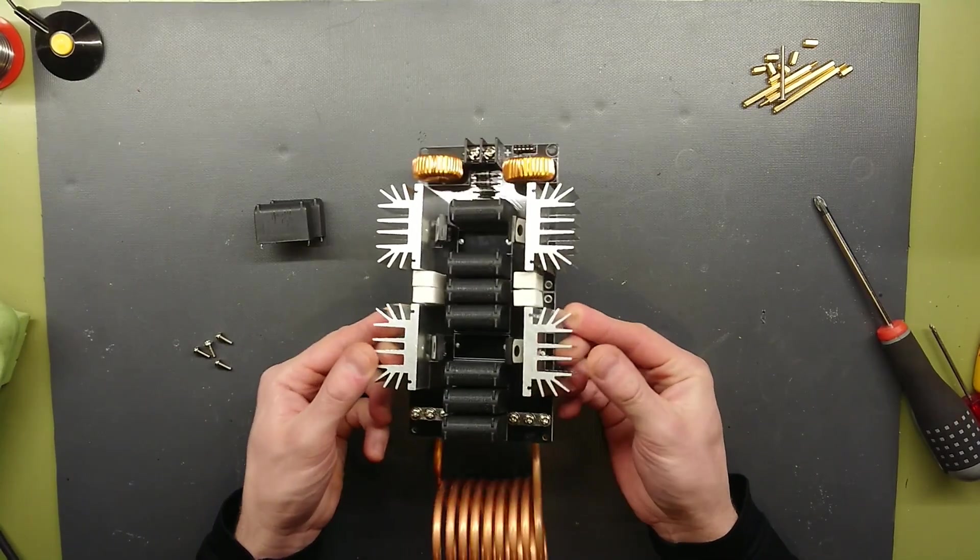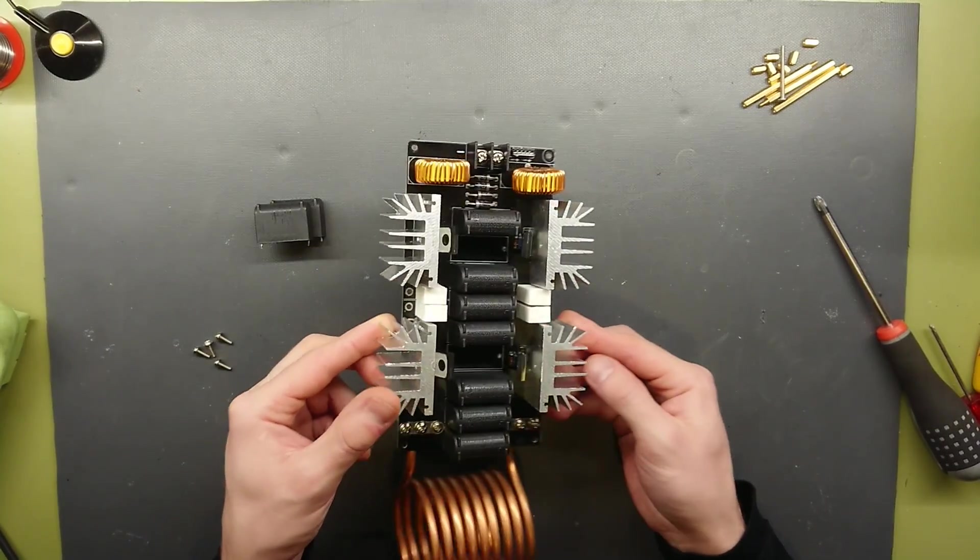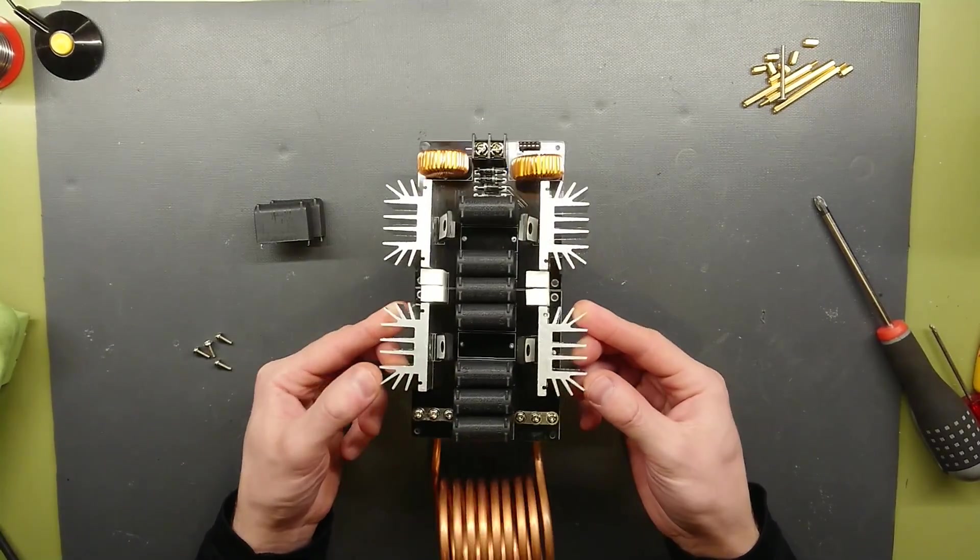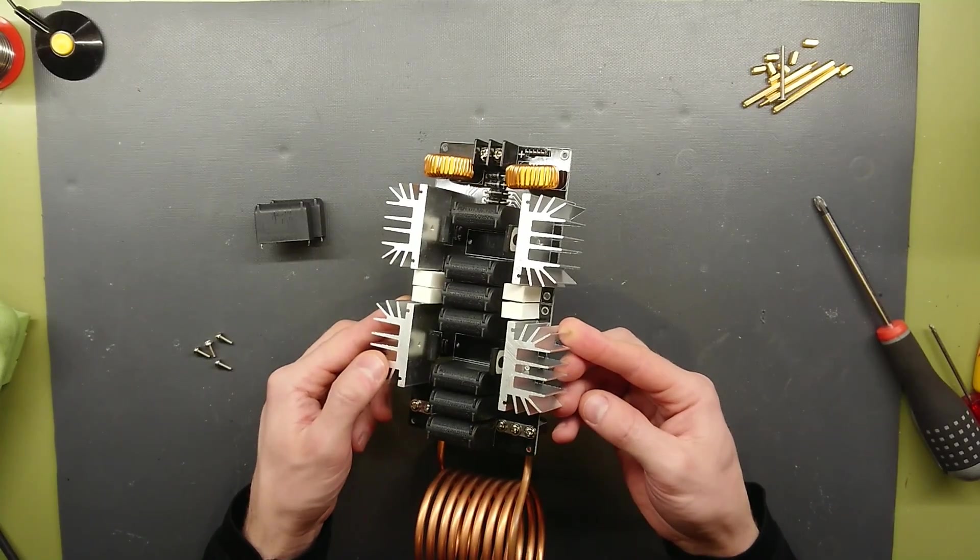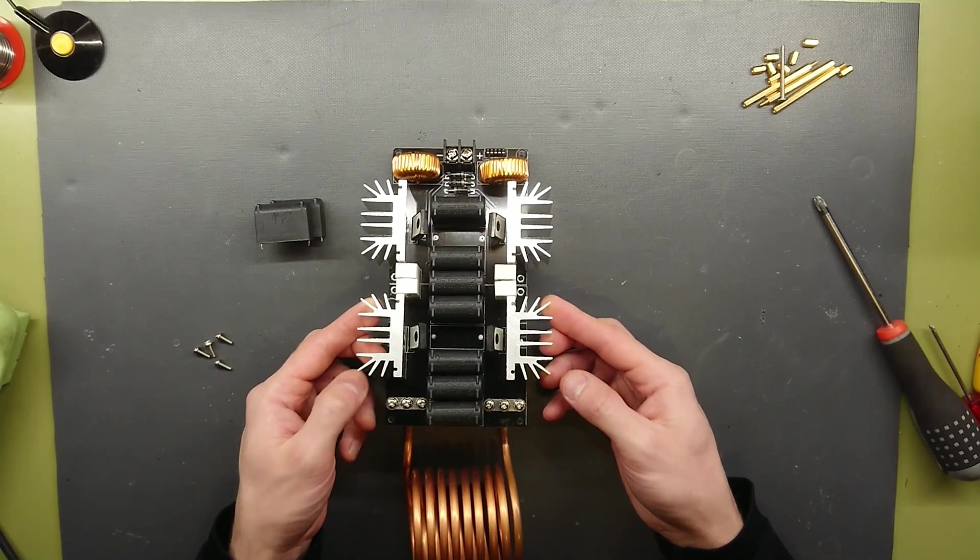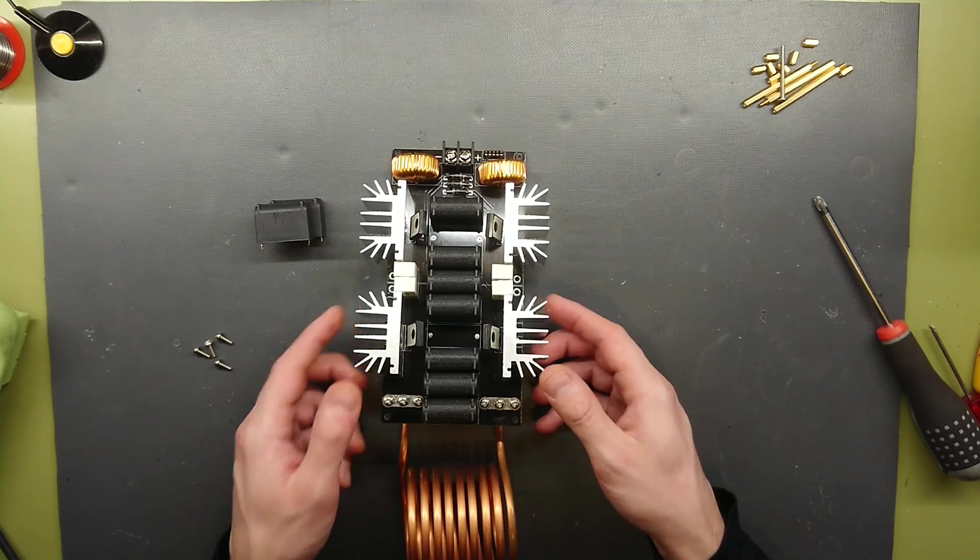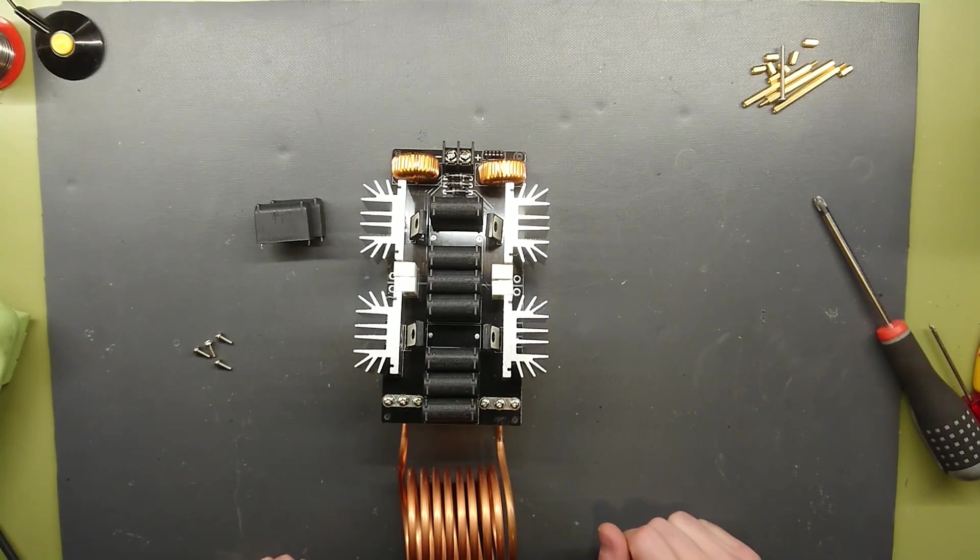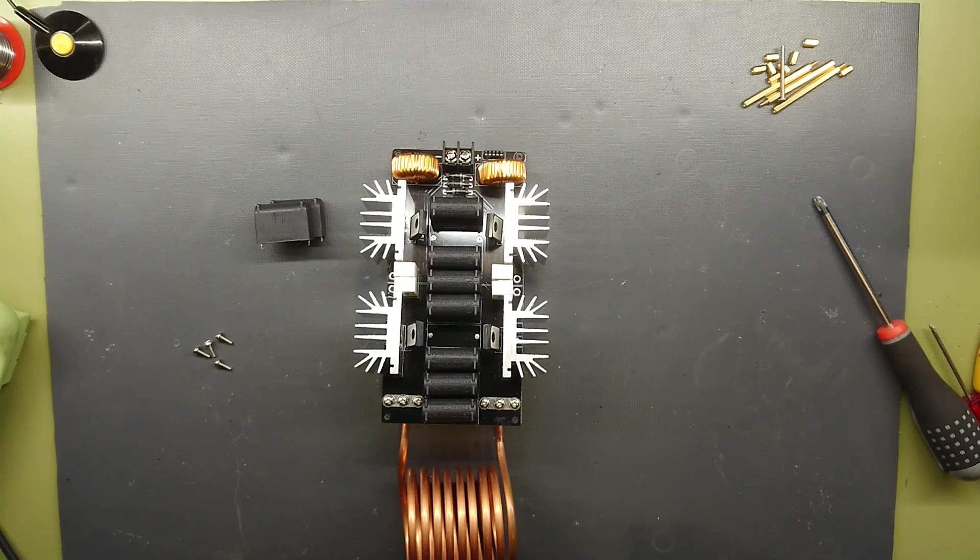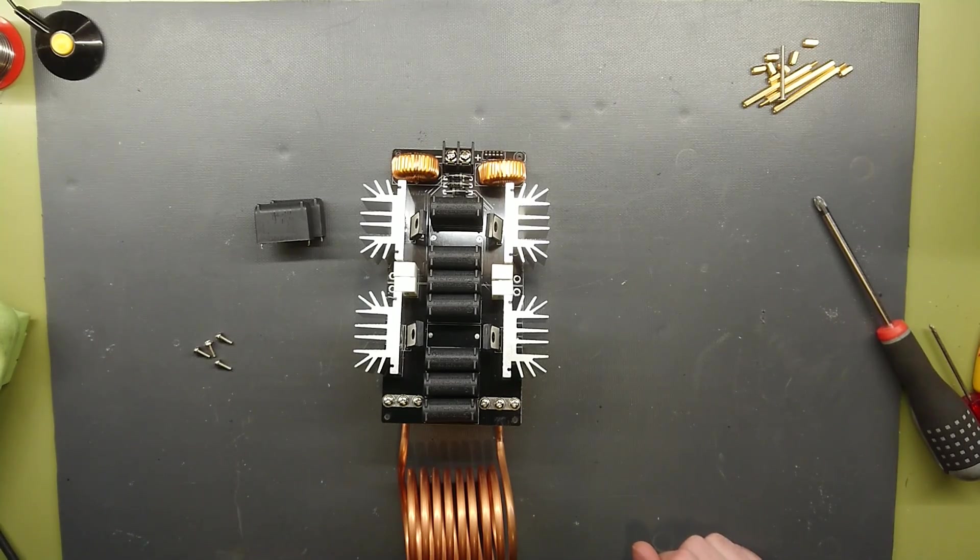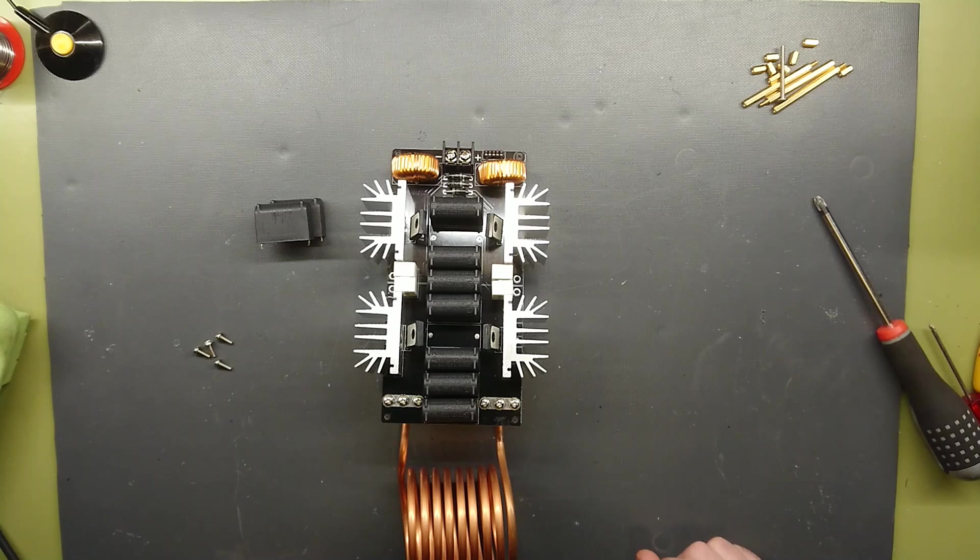And as you can see here, not a single drop of heat transferring compound. And I would say that three out of four screws were not even fastened enough to keep the MOSFETs securely against the heat sink surface. So let's get some thermal paste on these heat sinks and put it all together again.